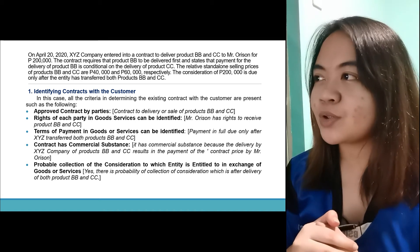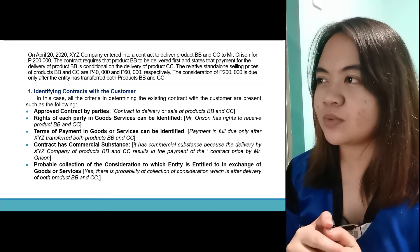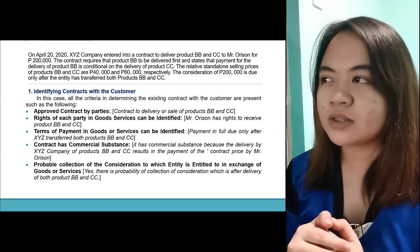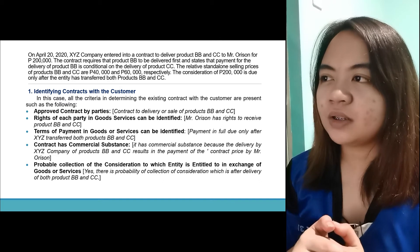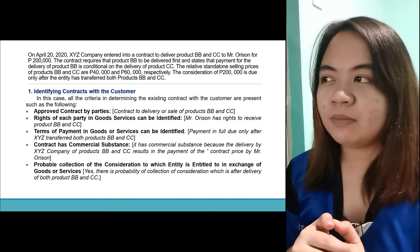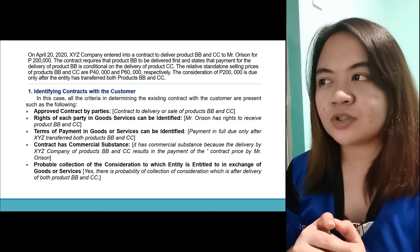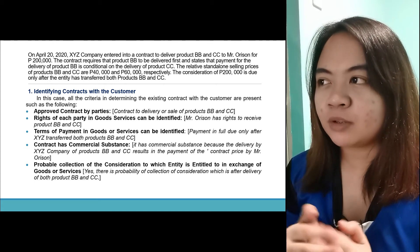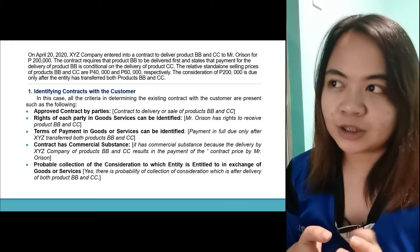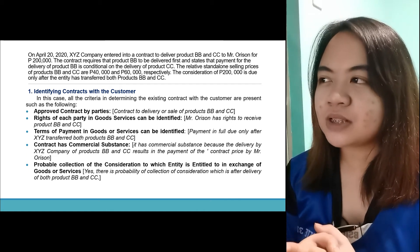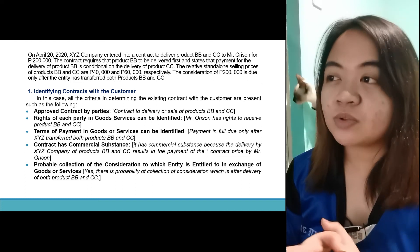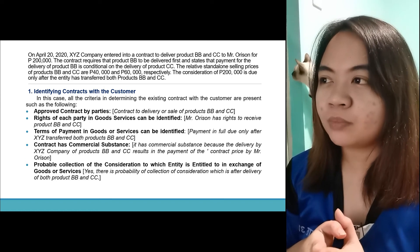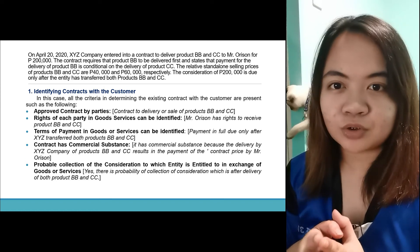Here's an example. On April 20, 2020, XYZ Company entered into a contract to deliver products BB and CC to Mr. Arson for $200,000. The contract requested that product BB be delivered first, and states that the payment for the delivery of product BB is conditional on the delivery of product CC. The relative standalone selling prices of product BB and CC are $40,000 and $60,000 respectively. The consideration of $200,000 is due only after the entity has transferred both products BB and CC.